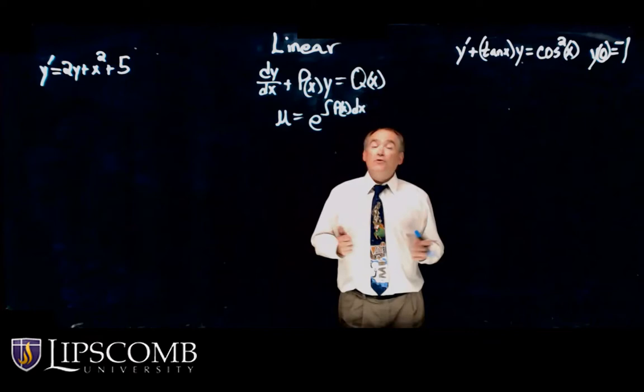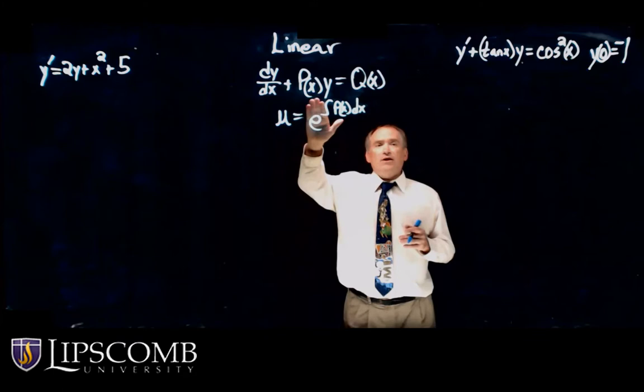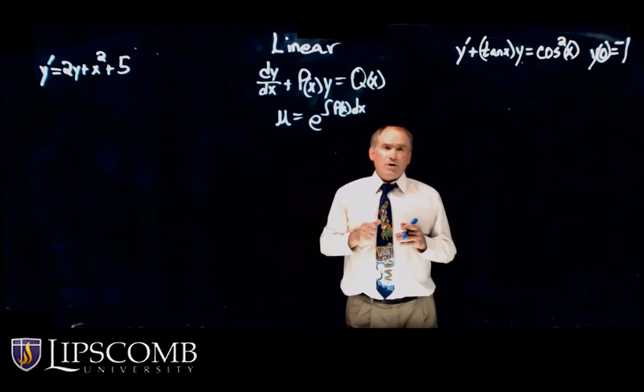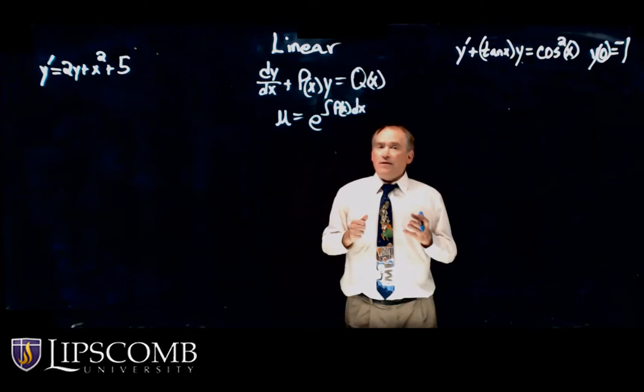Now we're going to look at the next method: linear equations. We've got to get it in a certain form, just like we've done with the other methods. We want to get it in the form dy/dx + P(x)y = Q(x). Once we get it in this form, we're going to multiply by an integrating factor μ, equal to e to the integral of P(x) dx.